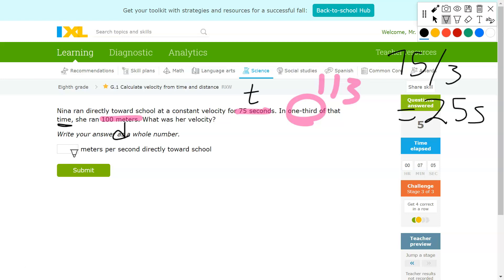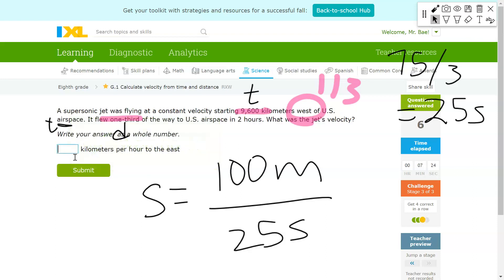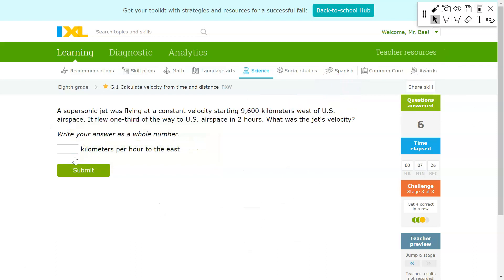Using that number, you're going to solve it into the formula again. So speed equals 100 meters divided by 25 seconds. Your answer should be 4. And I'll do one last question in stage 3 just to make sure you guys got the hang of it.